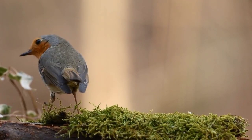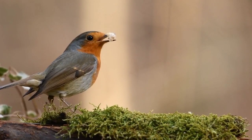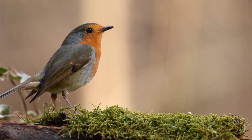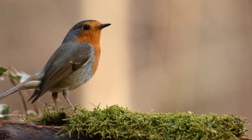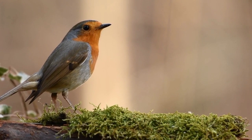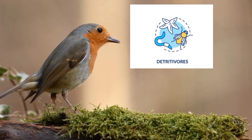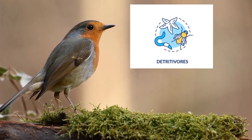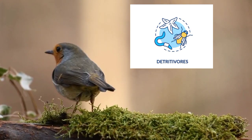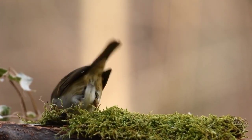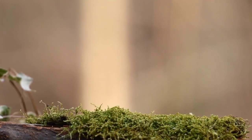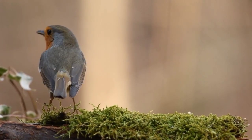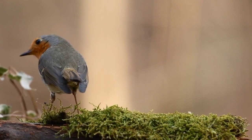Detritivores and decomposers are the final part of the food chain. They are essential for recycling of chemical elements within all ecosystems. Detritivores are organisms that eat non-living plants and animal remains. For example, scavengers and vultures eat dead animals. They feed on pieces of decomposing organic matter, breaking them down into smaller fragments.